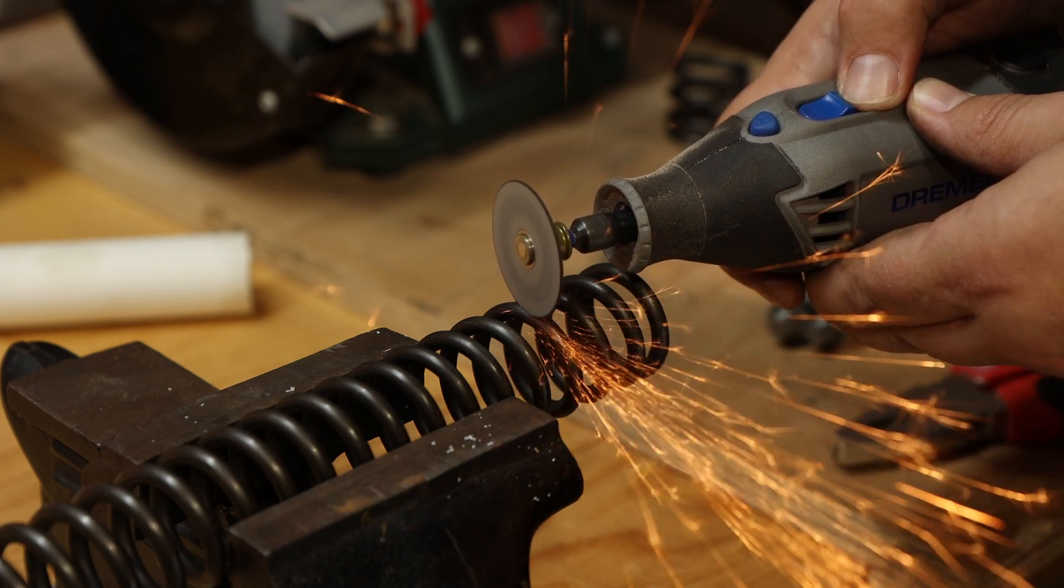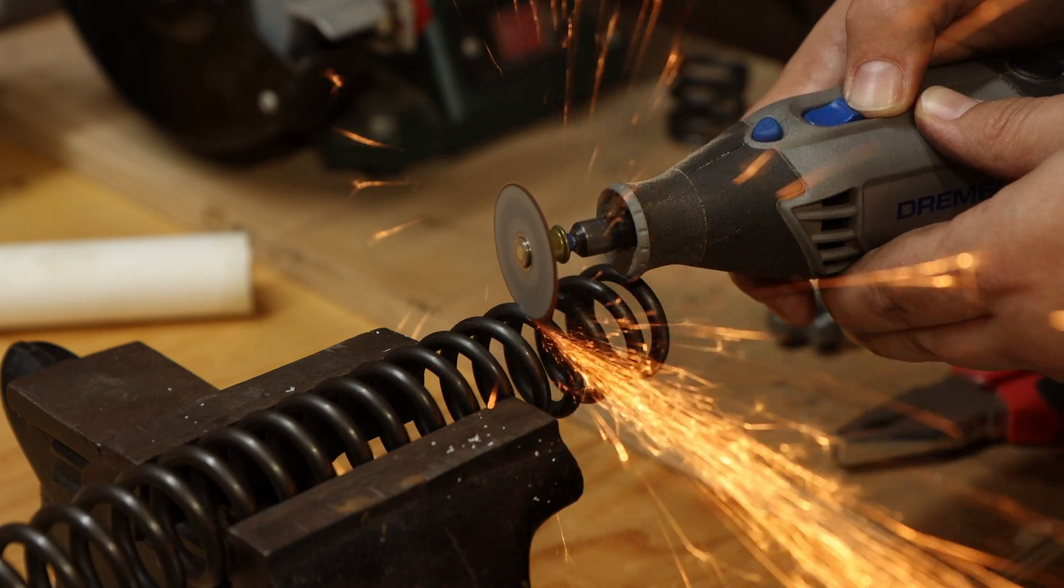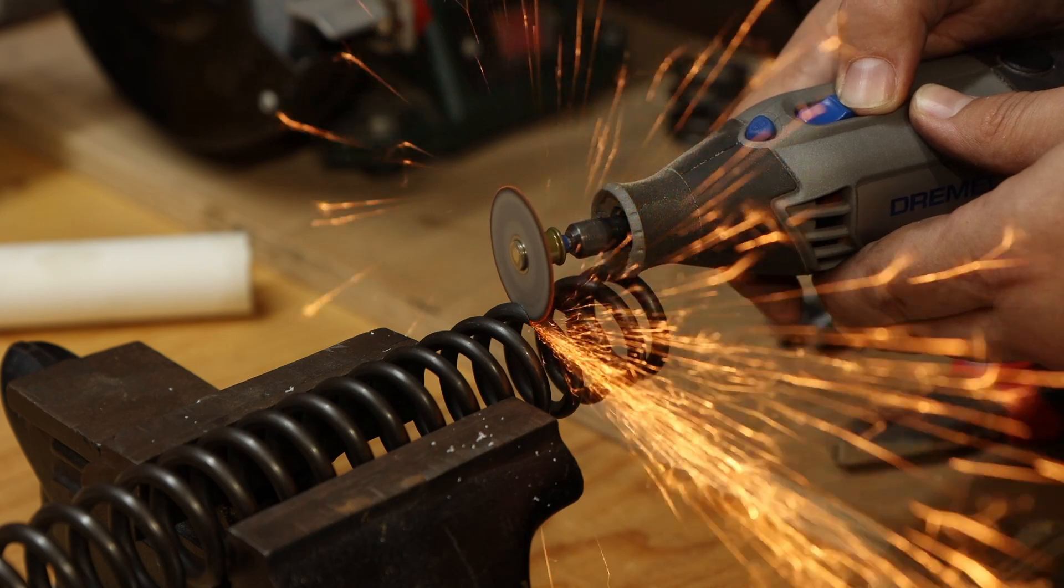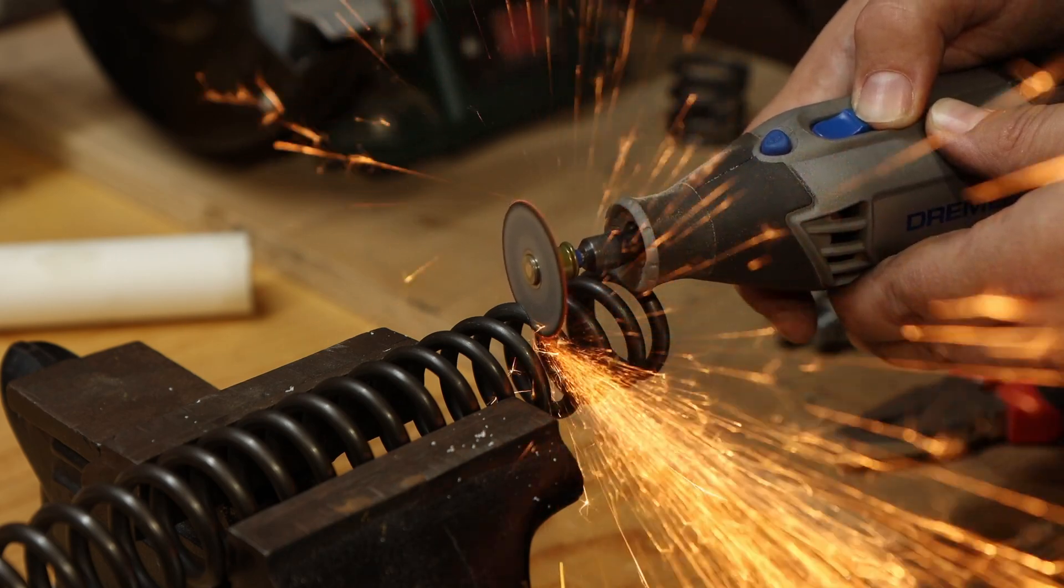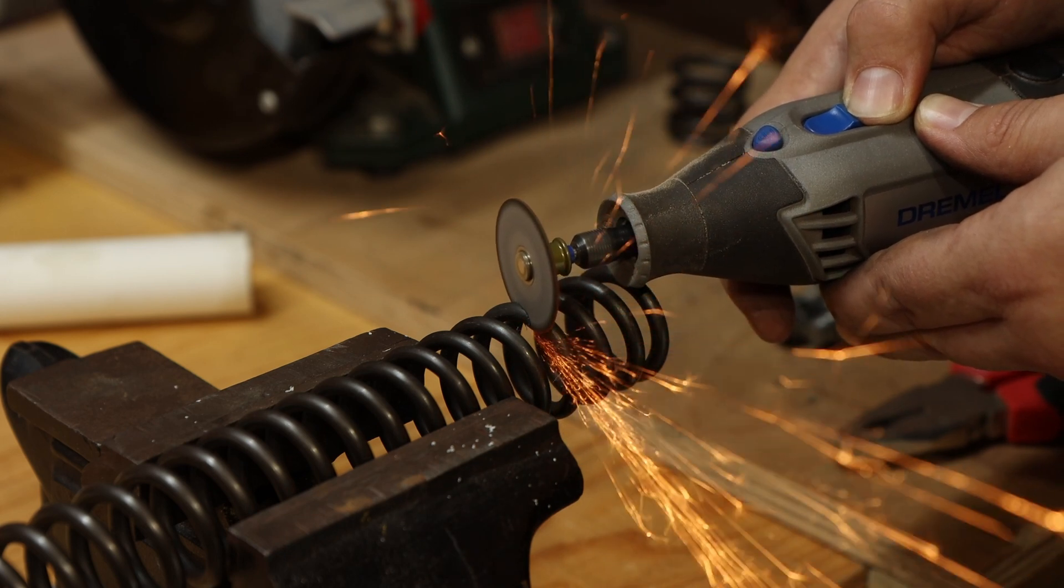The first step is marking where to cut it and cutting the spring to size, 40 millimeters in the case of this vice. As you can see by the amount of sparks, this spring is made from some type of high carbon steel. That's good to know for the heat treatment process later on in this video, but let's get back to the shaping of the spring.